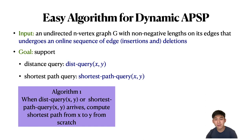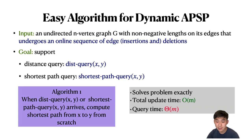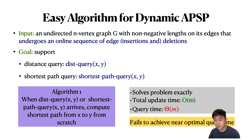One simple algorithm for dynamic APSP is the following: whenever a query comes along, we simply compute the path connecting x to y from scratch. This algorithm solves the problem exactly and has total update time O(m), which is optimal. However, the query time is big-theta of m, which is far from optimal.